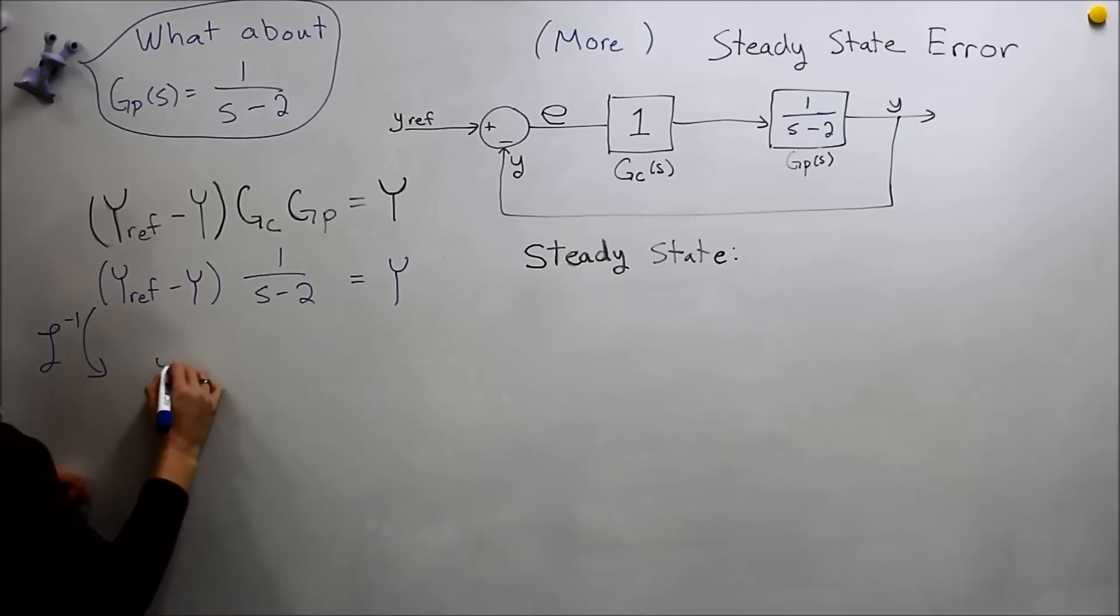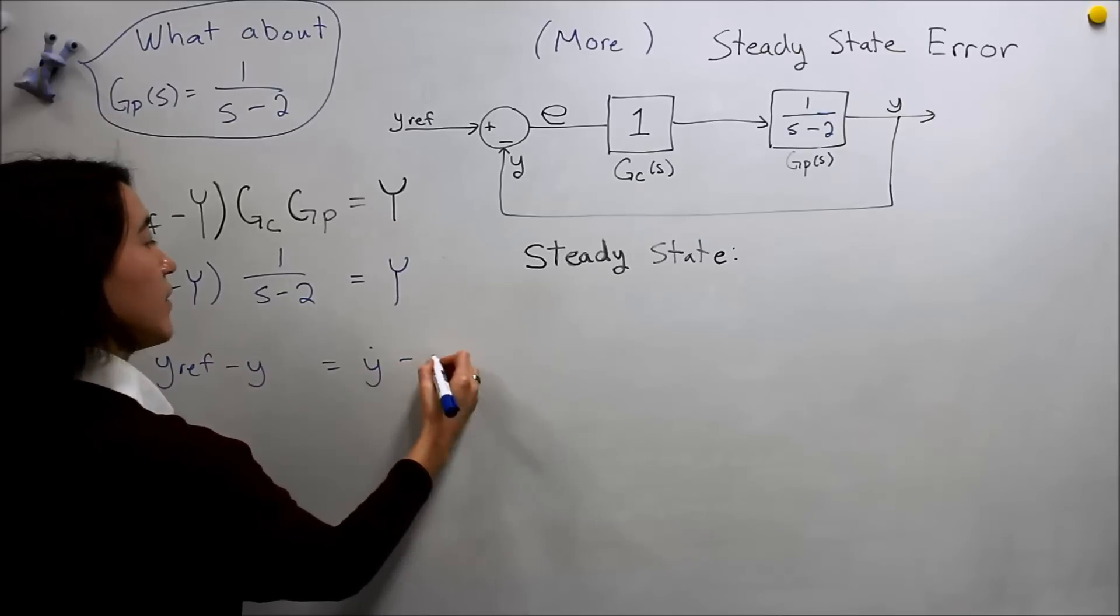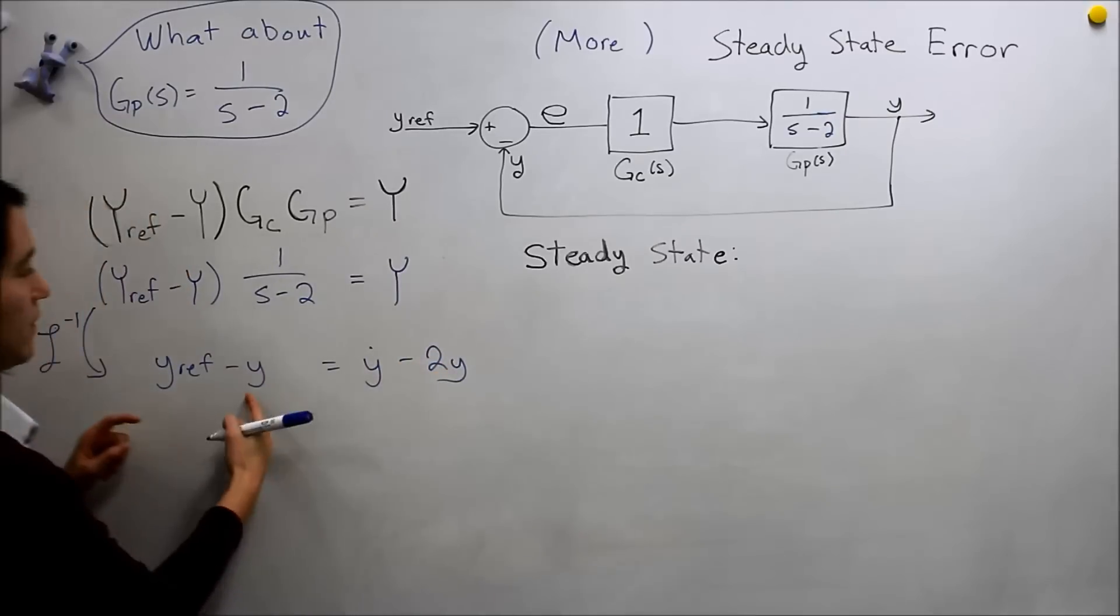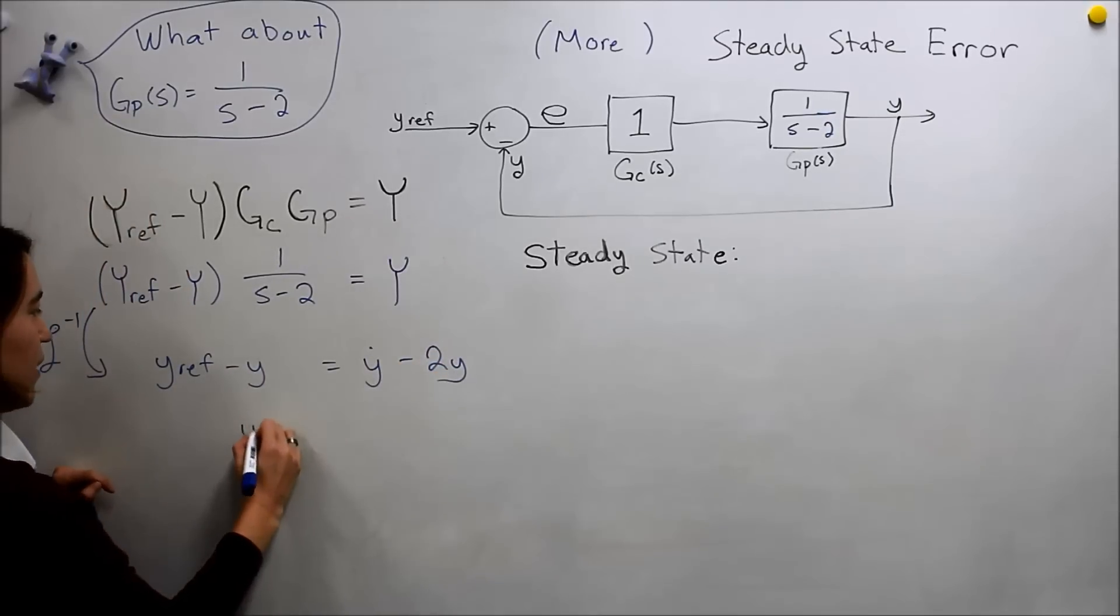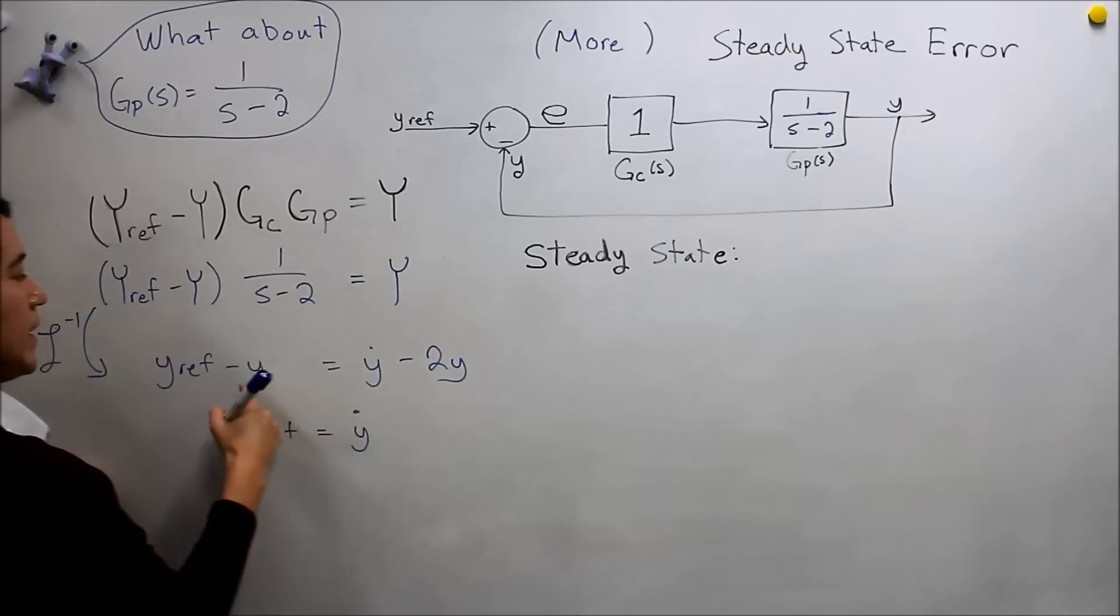we will get y ref minus y equals y dot minus 2y. And if we add that to that side, we'll get y ref equals y dot, and then we've added one, so it's a minus y here.